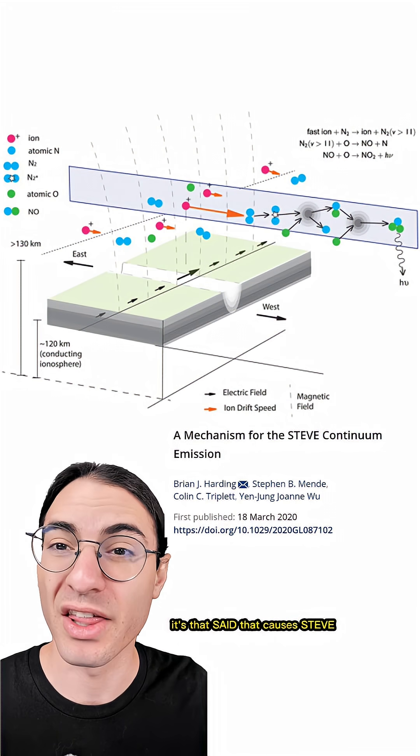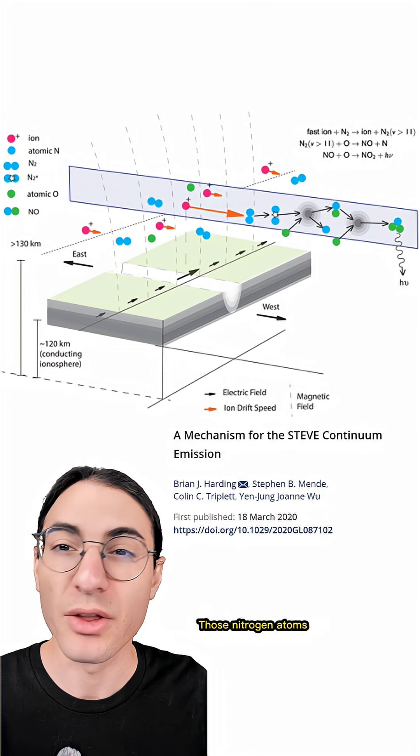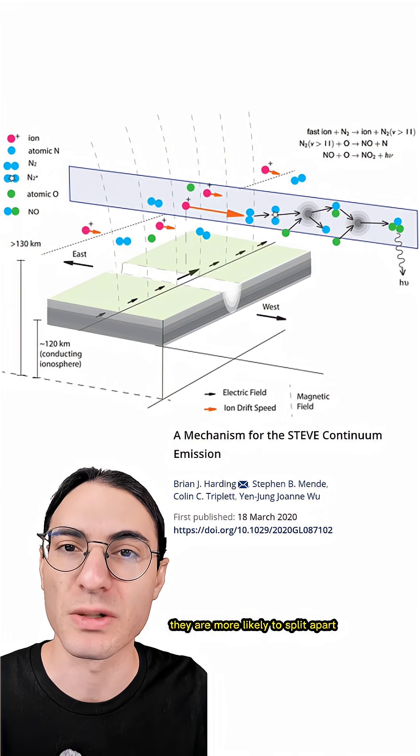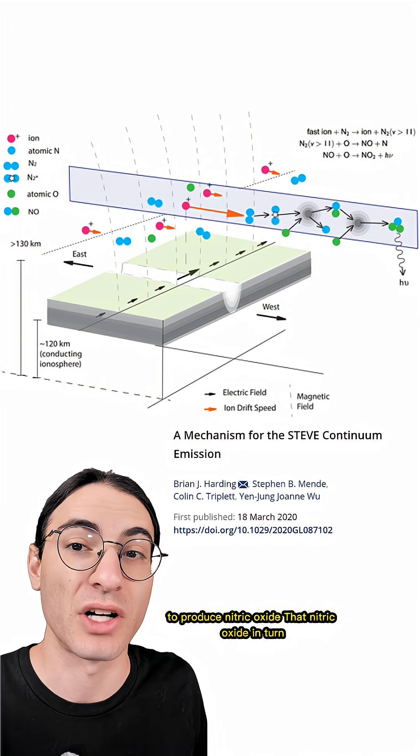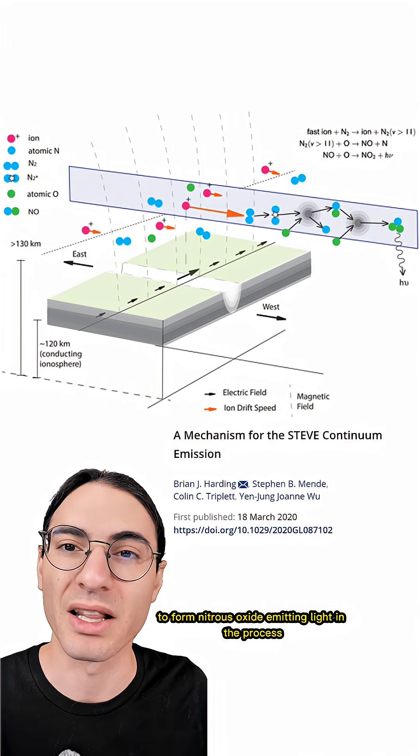Anyway, it's that sed that causes Steve. By smashing those ions into neutral nitrogen atoms, those nitrogen atoms start to vibrate in a very particular way. And when they vibrate like that, they are more likely to split apart and join with free oxygen atoms to produce nitric oxide. That nitric oxide in turn combines with another loose oxygen to form nitrous oxide, emitting light in the process.